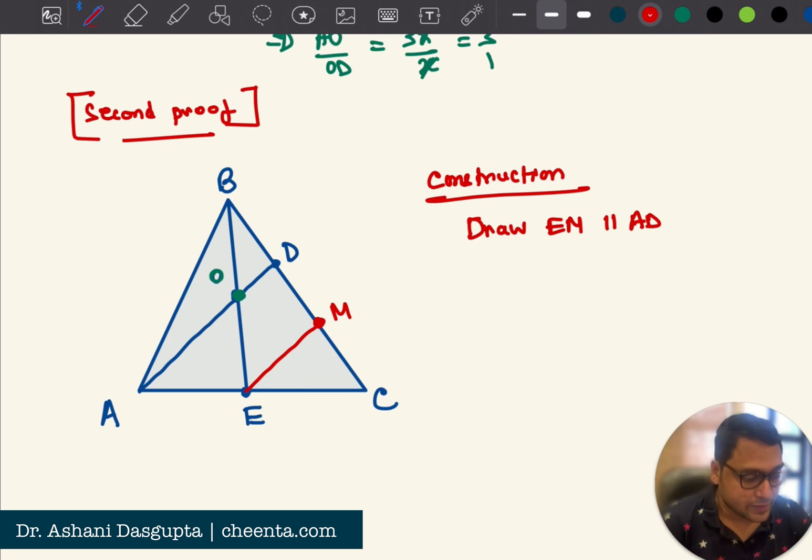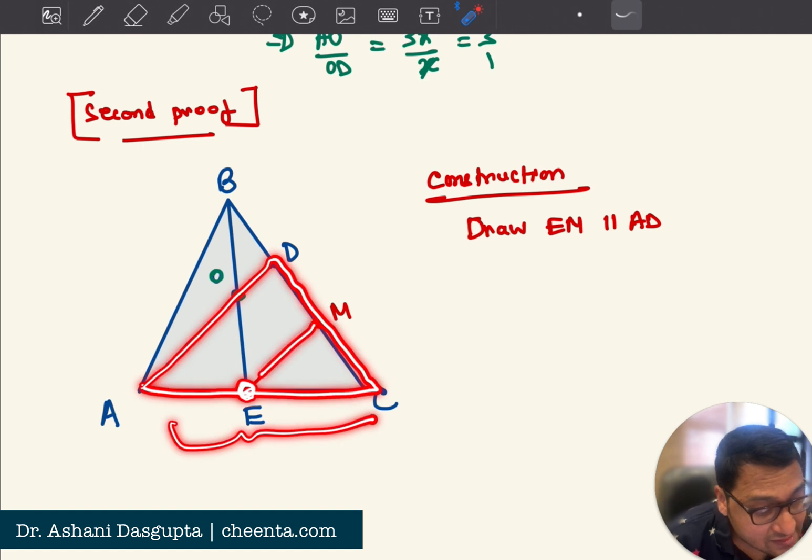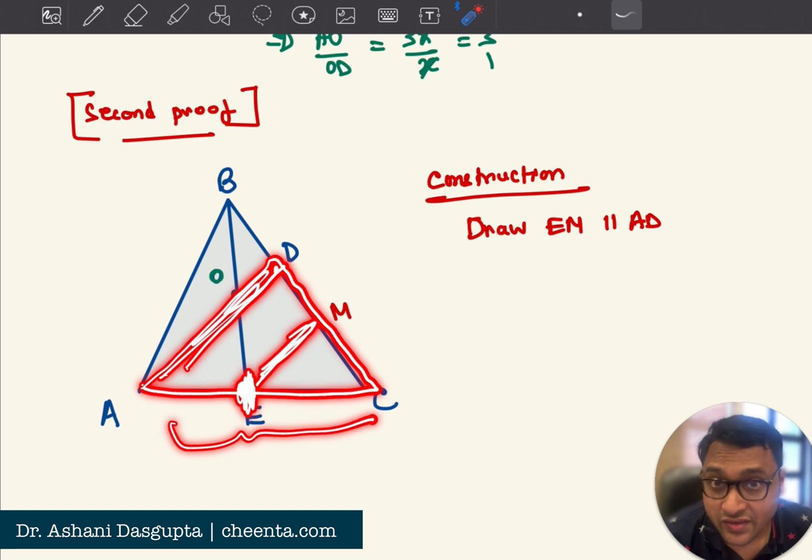So this point is suppose M. So construction is draw EM parallel to AD. Draw EM parallel to AD. Now if we focus on this particular triangle, E is the midpoint of AC. EM is parallel to AD. E is the midpoint of AC. EM is parallel to AD. So surely by midpoint theorem.